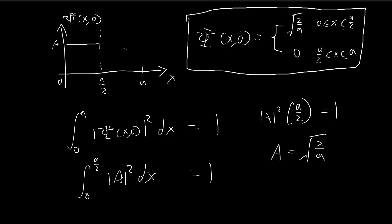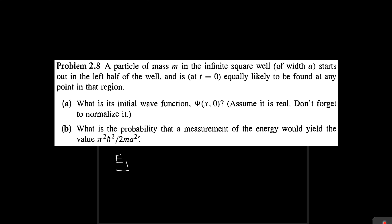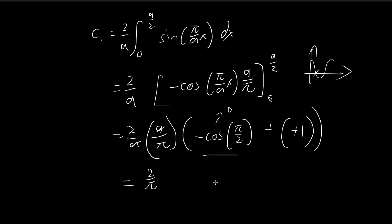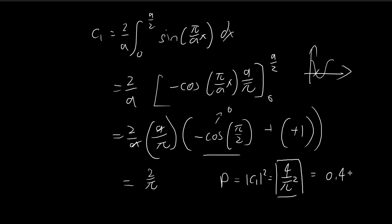Going back to what we're looking for — we want the probability, which is equal to |c1|². So the probability equals c1 squared, which is equal to 4 over π². This is our answer. And if you plug this into a calculator, you see that this is equal to approximately 0.405.